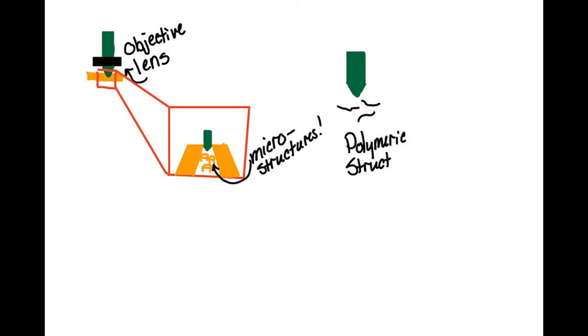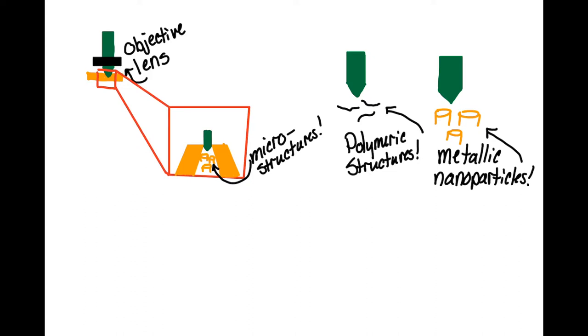Direct laser writing, or DLW for short, is the process of focusing a laser beam to realize microstructures. Typically, this technique is used to fabricate submicrometer 2D and 3D polymeric structures, but recently the LPQM lab demonstrated that the DLW technique can be used to create metallic nanostructures.